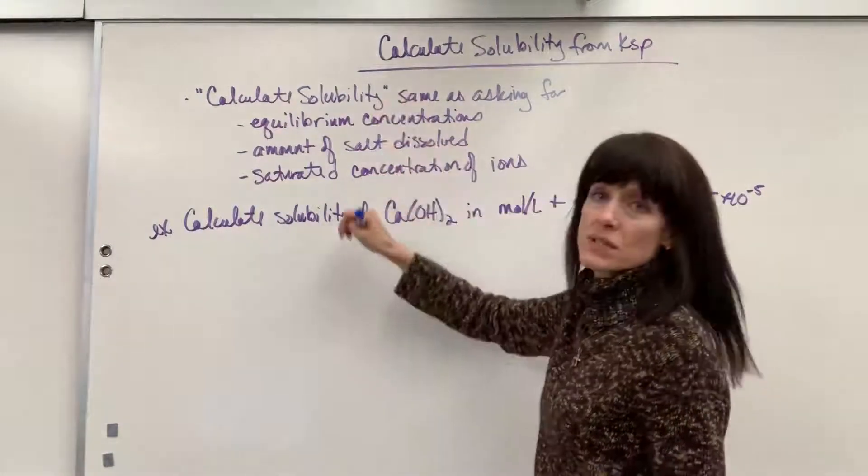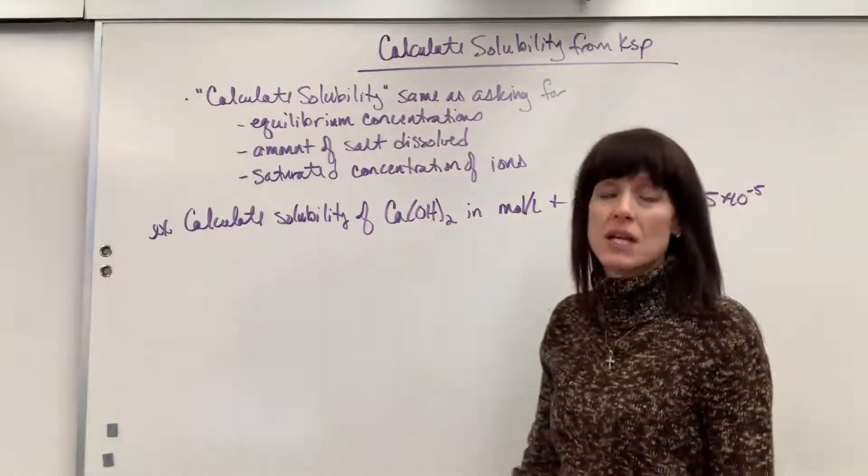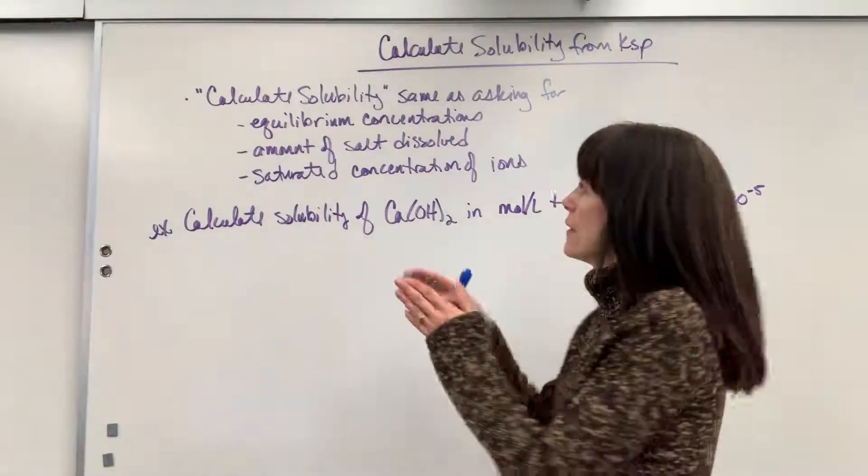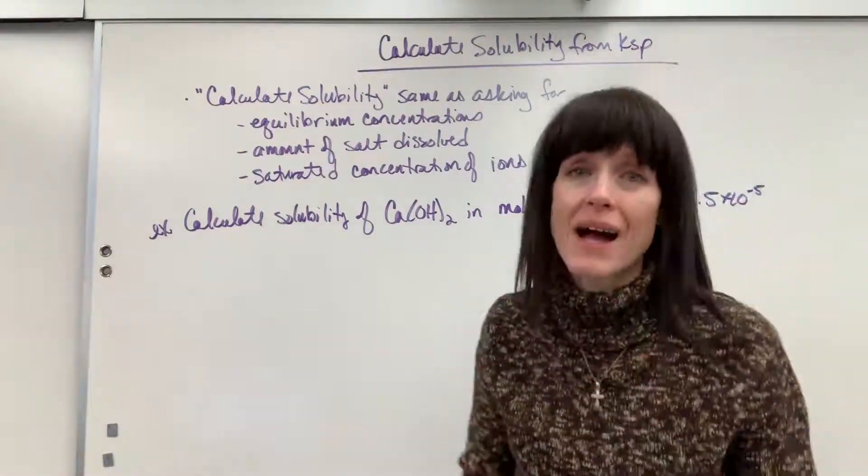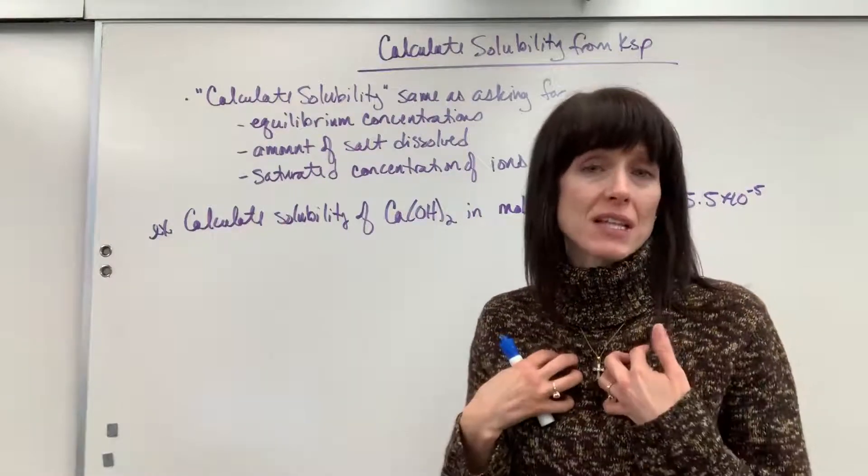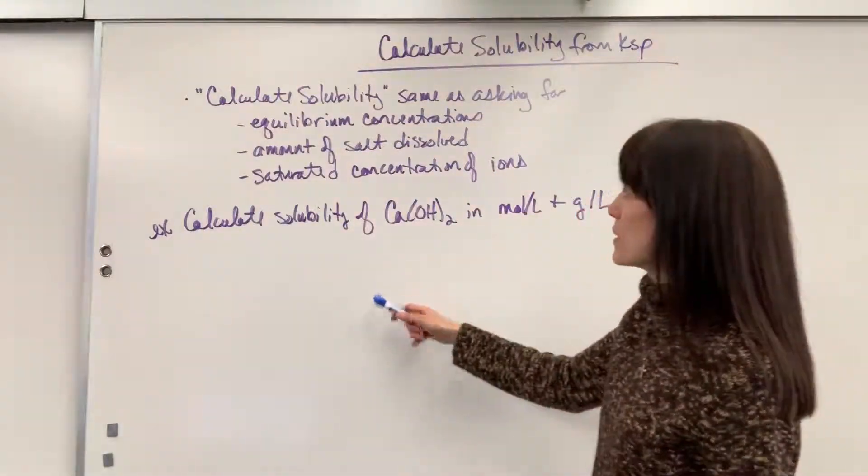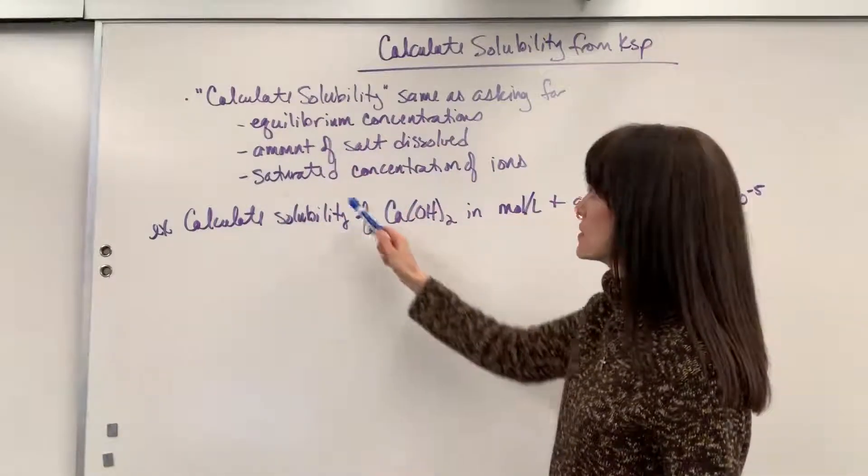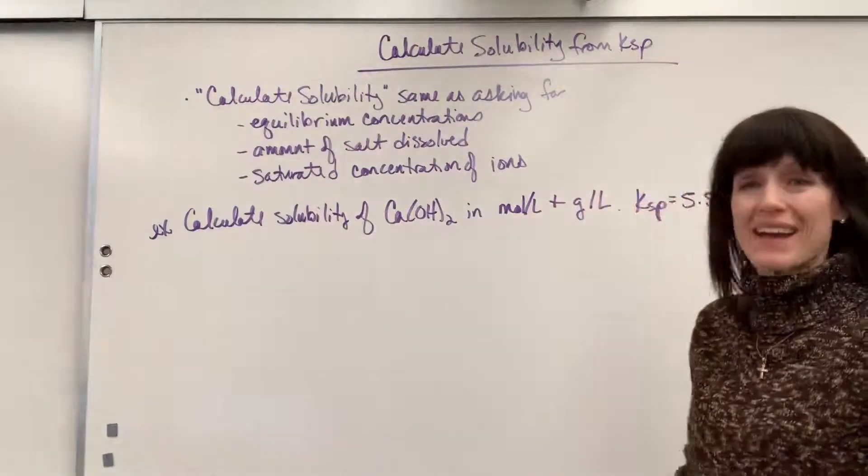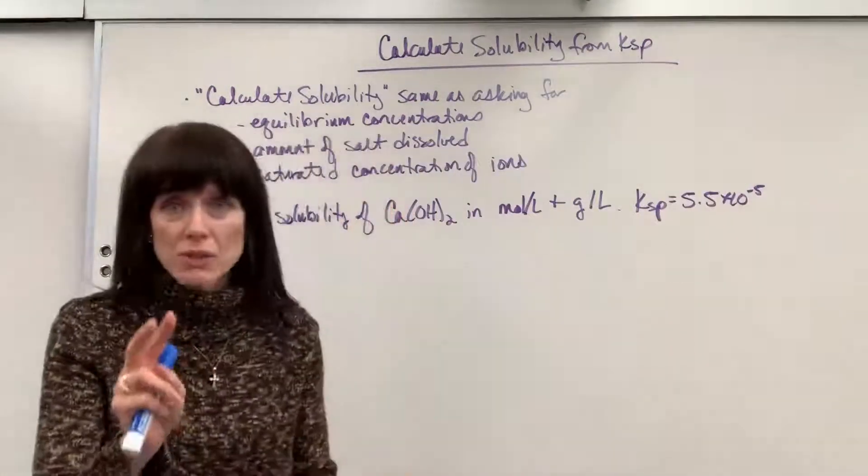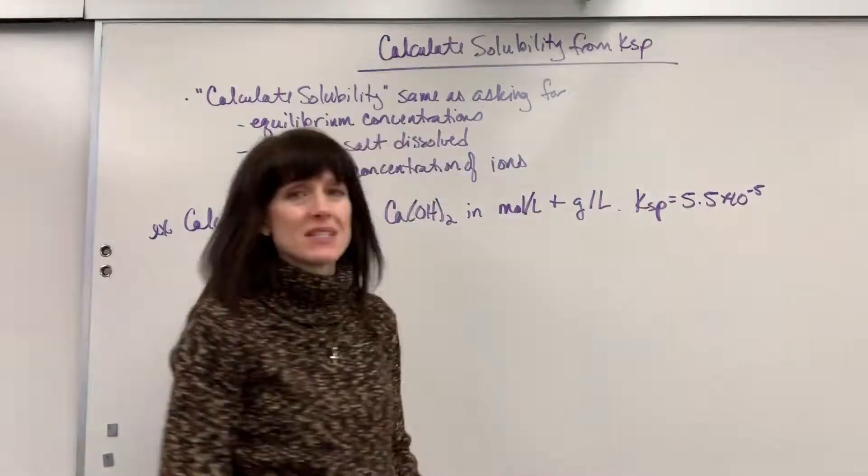It could be: what are the equilibrium concentrations of ions, what's the amount of salt that dissolves, or what are the saturated concentrations of the ions. All of those are really just calculate solubility. So put this down in your notes, study that, and as you do your homework I'm sure that you're going to see some questions that are worded all four ways. Here's an example problem for us: calculate solubility of calcium hydroxide in moles per liter and grams per liter if the Ksp is 5.5 times 10 to the minus 5.